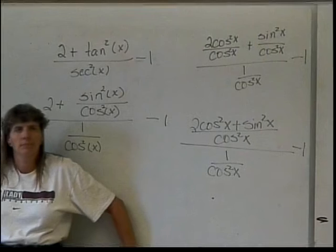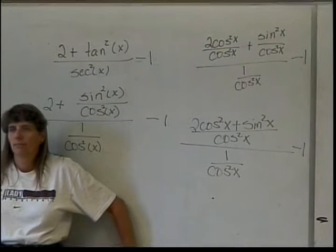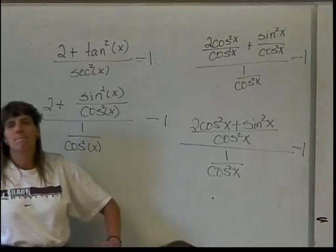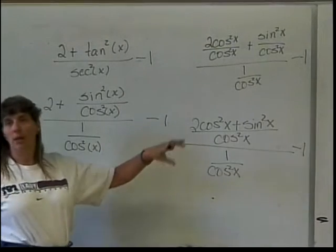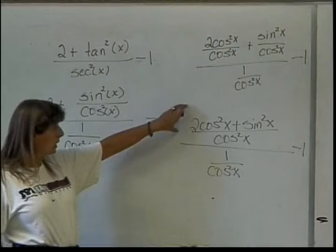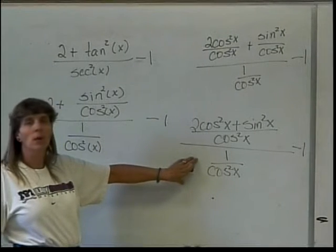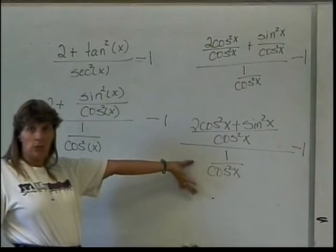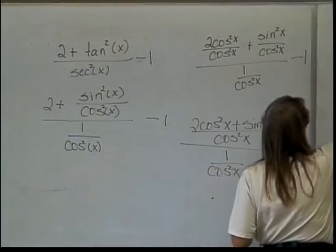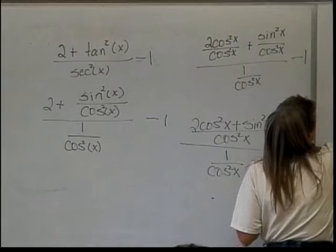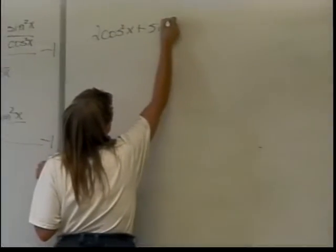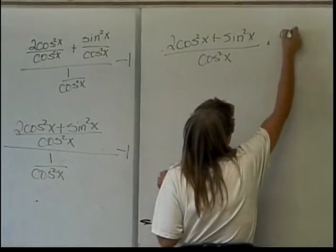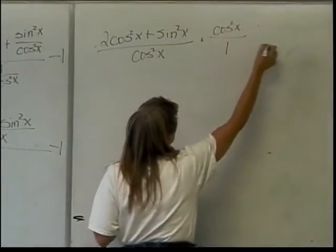You're telling me I should divide the numerator by the denominator. So, I should actually do this division. And remember, when I divide one fraction by another, it's the same thing as multiplying the numerator by the multiplicative inverse of the denominator. So, this is going to be 2 cosine squared of x plus sine squared of x over cosine squared of x times cosine squared of x over 1, and then that's still all minus 1.